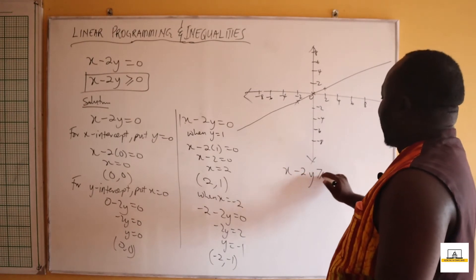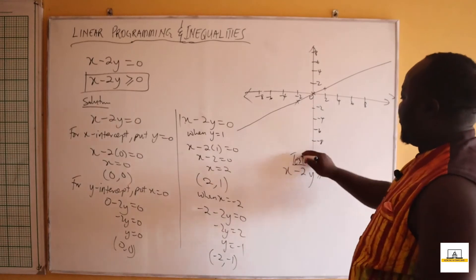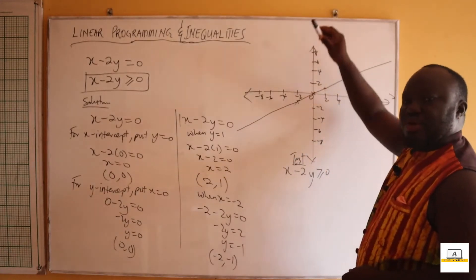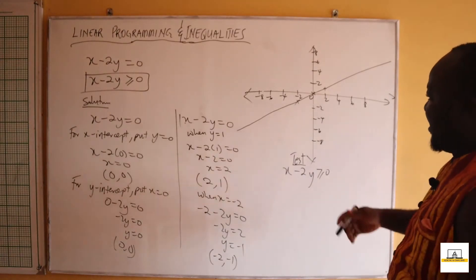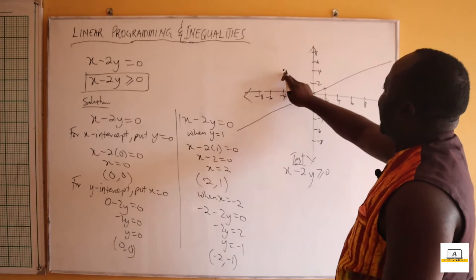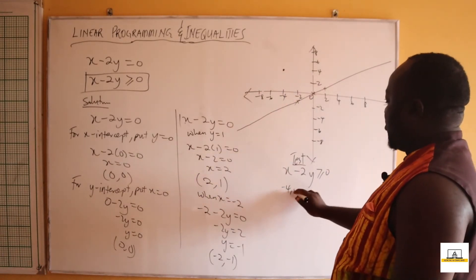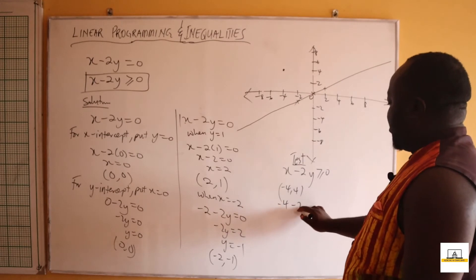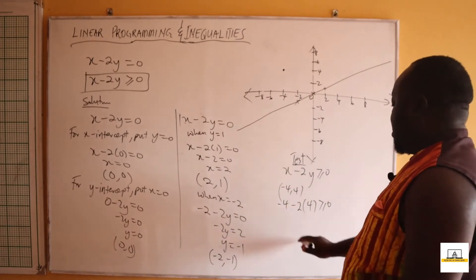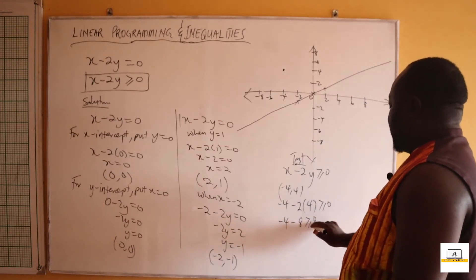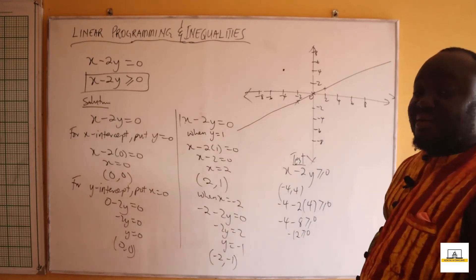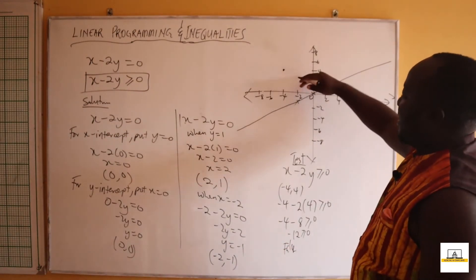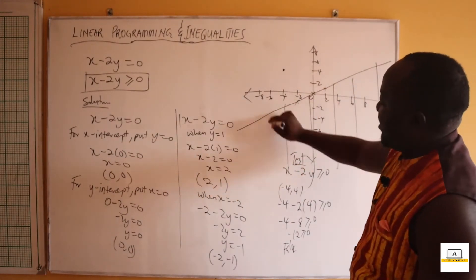Now we test where x minus 2y is greater than or equal to zero — whether the solution region is below or above the line. Pick a point above the line, say x equals negative 4, y equals 4. Substituting: negative 4 minus 2 times 4 equals negative 4 minus 8 equals negative 12. Is negative 12 greater than or equal to zero? This is a false statement, so the solution does not lie above the line.